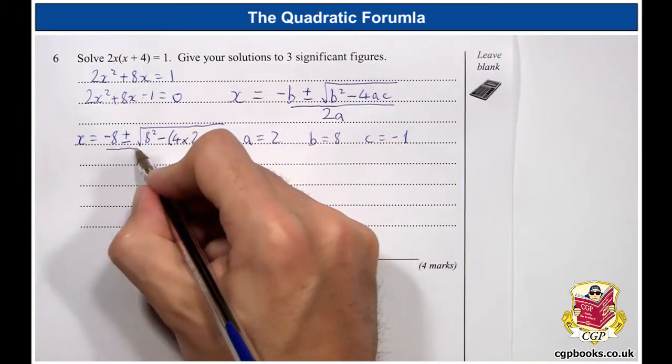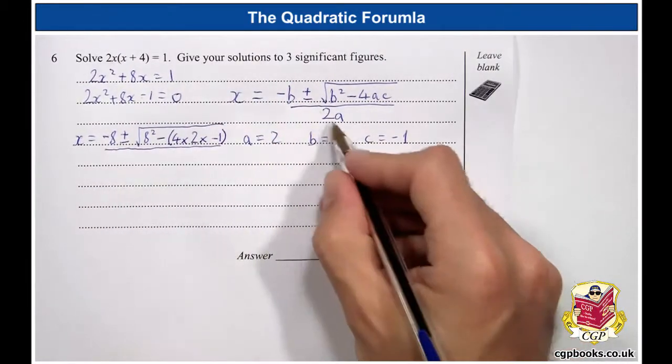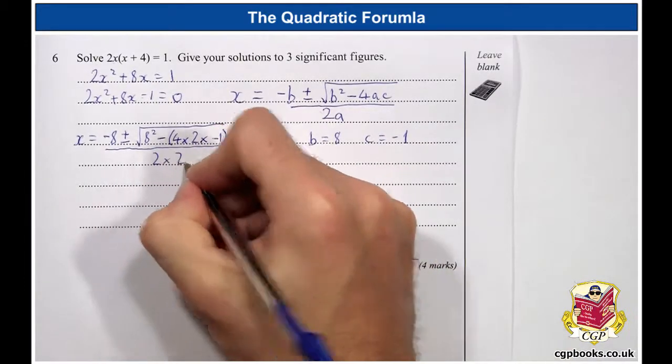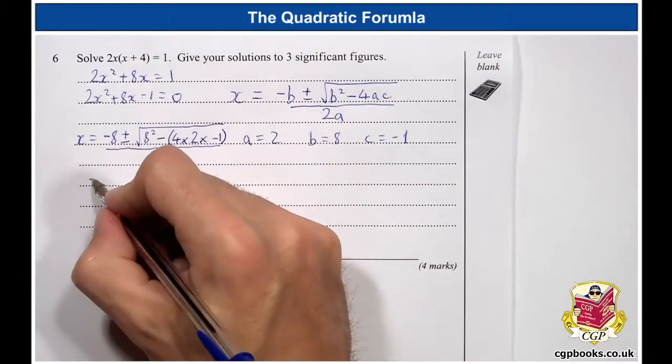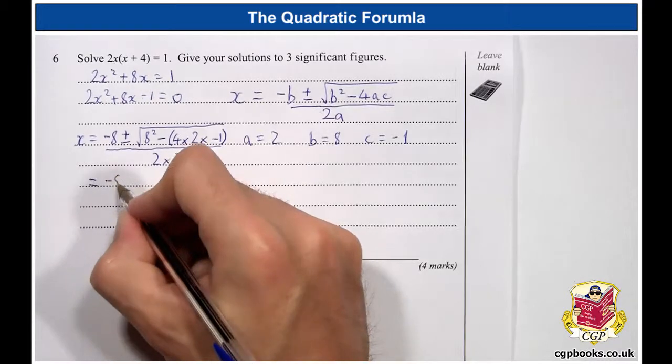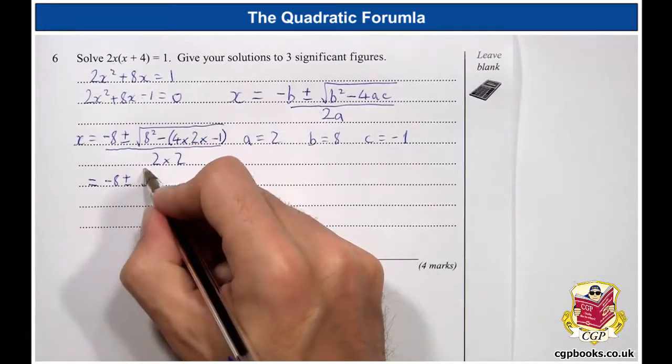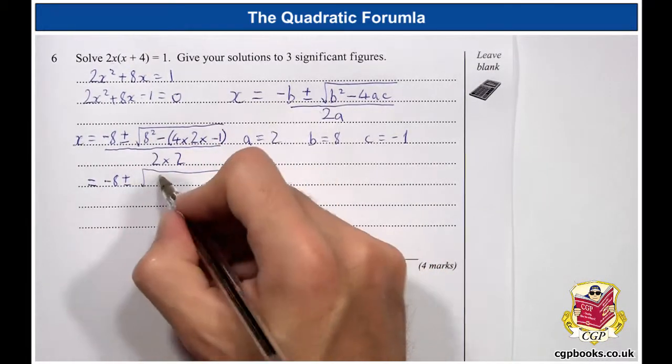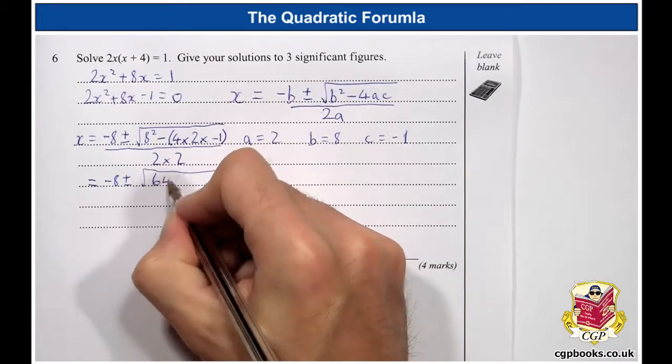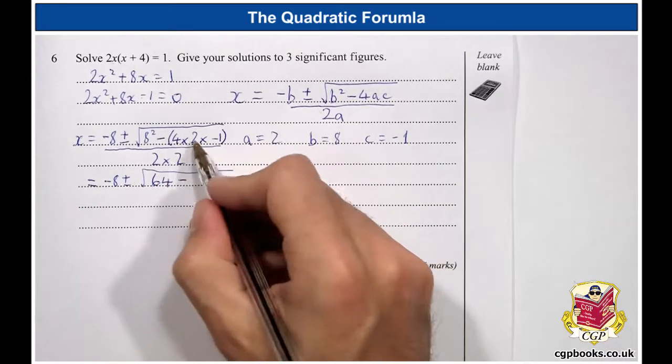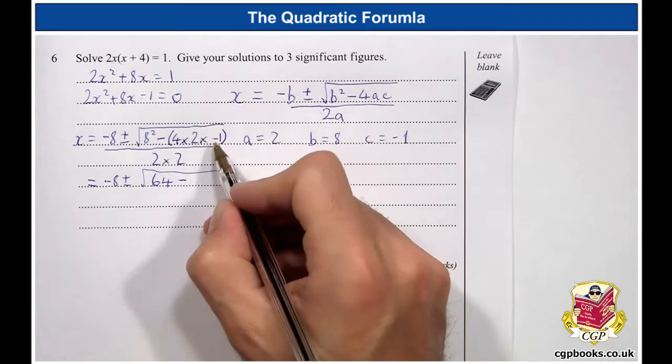Here's where we have to be careful with the minus numbers. Over 2a, so that's 2 times 2. Right, minus 8, plus or minus the square root of 8 squared, that's 64, minus 4 times 2, that's 8, times minus 1.